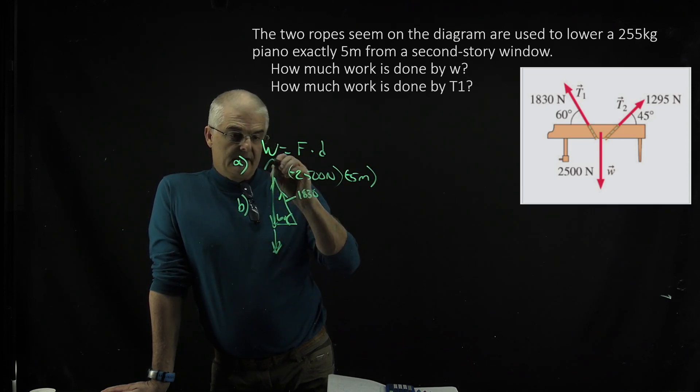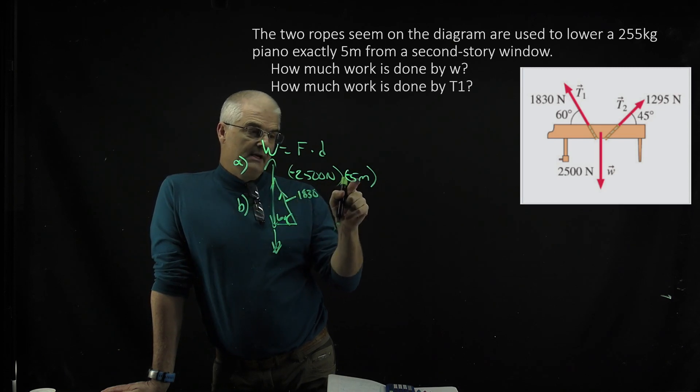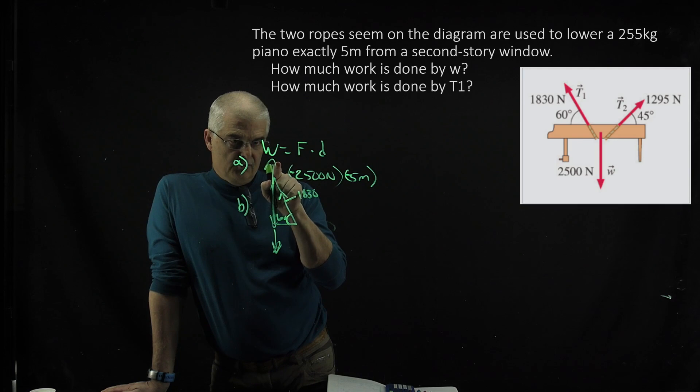Actually, it's up, I guess. Force in the y direction. And the distance it's traveling, though, is still negative five. So you've got a positive force and a negative distance, and that's going to give you a negative number of joules or work.